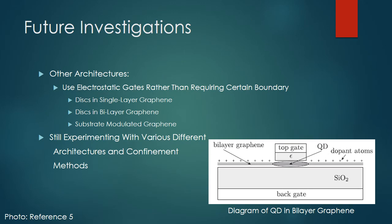Many investigations after the 2007 Trisetel paper, and continuing on to today, are involved with developing new graphene quantum dot architectures, which will be able to surpass the previously mentioned challenges, as well as confer additional possible benefits. Some architectures that have previously been explored, such as disks in single and bilayer graphene, and substrate modulated graphene, involve using electrostatic gates rather than armchair boundaries to lift the valley degeneracy and successfully confine the particle.